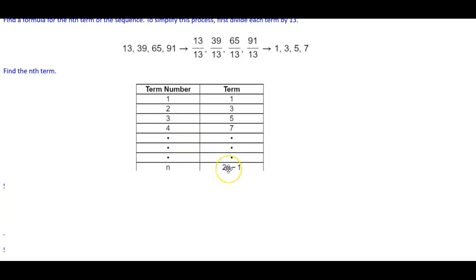2 times 4 is 8, minus 1 gives us 7. 2 times 3 is 6, minus 1 gives us 5. 2 times 2 is 4, minus 1 gives us 3, and 2 times 1 is 2, minus 1 gives us 1.